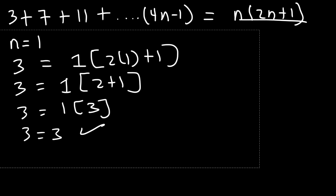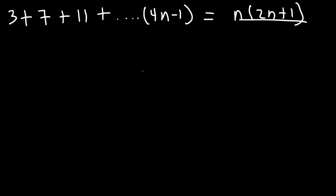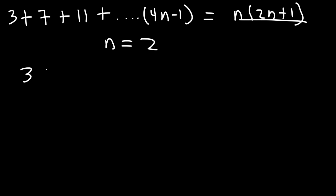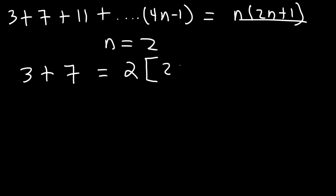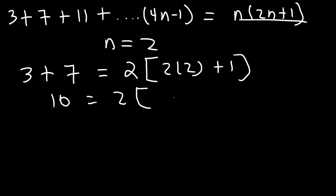Now what about n equals 2? Will it be true for that as well? On the left, we have the sum of the first two terms. That's 3 plus 7. On the right, we're going to plug in 2 into that expression, so it's going to be 2 times 2 times 2 plus 1. Now 3 plus 7 is 10. 2 times 2 is 4 plus 1, that's 5. And 2 times 5 is 10. So it's true for n equals 2.